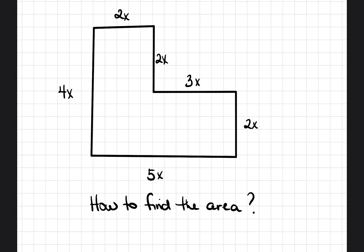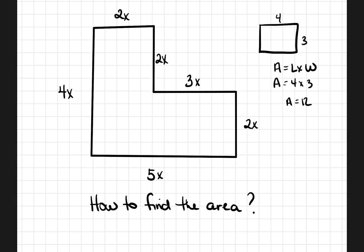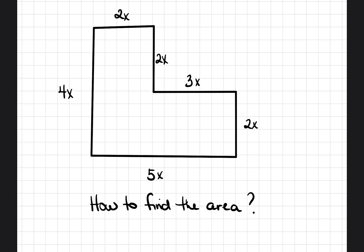They give you this shape — it's not a regular rectangle, it's not a square — and they want you to find the area. Normally you'd have a rectangle where area equals length times width. So area equals four times three, giving you 12 units squared. But in this case, the dimensions are numbers with a variable, which causes some people to get intimidated. And it's not just a regular rectangle — it's a different type of shape. But there's a very easy way to solve this.